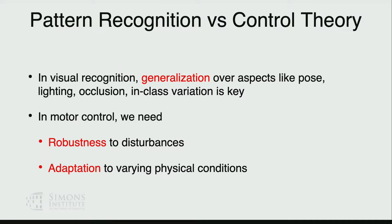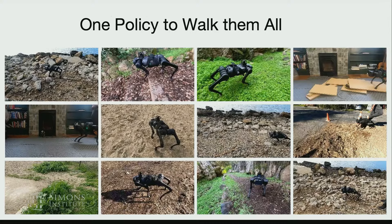Let's contrast pattern recognition versus control theory. Pattern recognition in the 1950s was equally prominent as symbolic AI, but then symbolic AI took off in CS departments. Pattern recognition hung around in EE departments and stat departments, but what they emphasized was generalization as the central problem. In control, you need robustness to disturbances and adaptation to varying physical conditions. This adaptation is the counterpart of generalization — you need the robot to walk in all these different conditions.